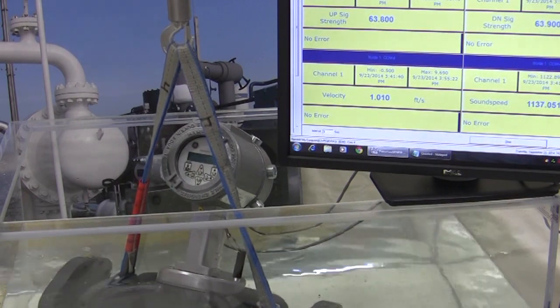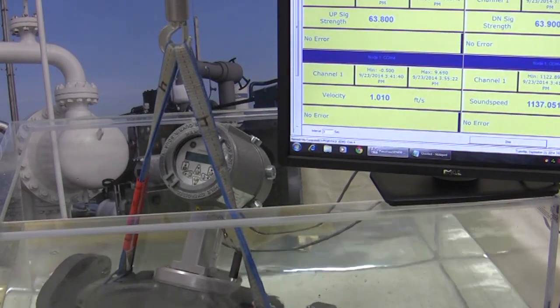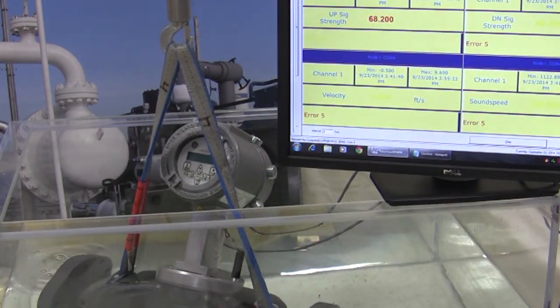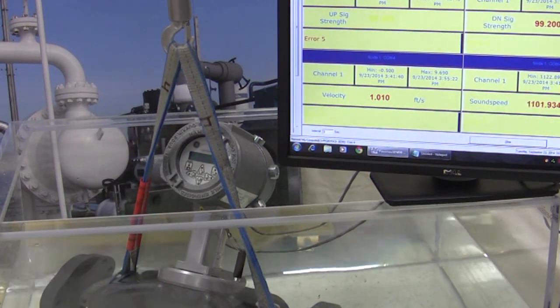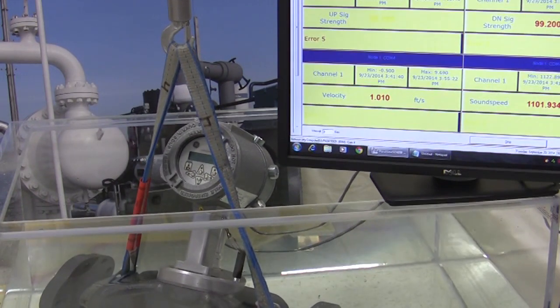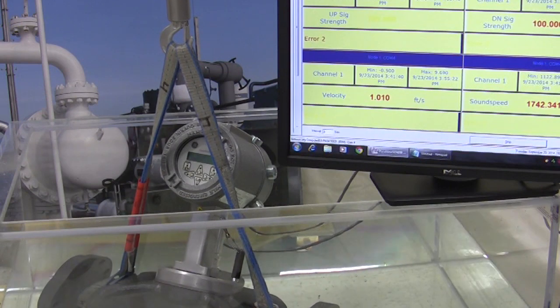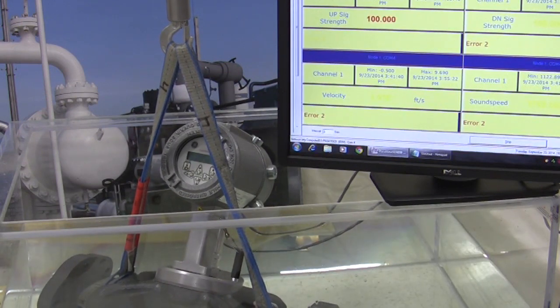The meter is now fully submerged. The flanges are just barely, the top of the flange is just barely above the water. We will leave it there for 30 seconds, simulating a large slug of water into the meter. You can see the meter now going into error, as we'd expect.